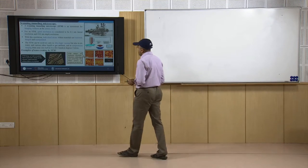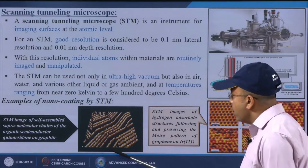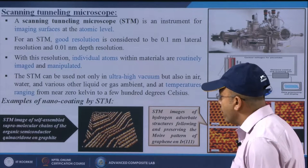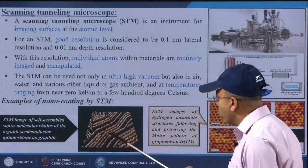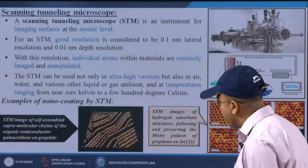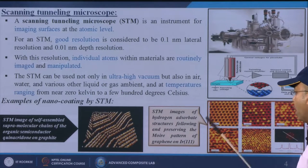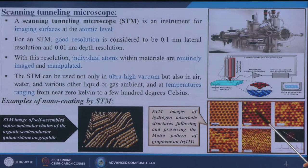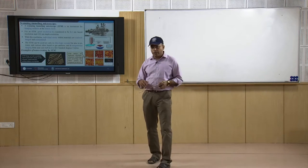Here we show examples of nano coating imaged by STM technology. The first figure shows an STM image of self-assembled supramolecular chains of the organic semiconductor quinostridone on graphite. On the graphite surface, we are doing the coating of this material, and by STM technology we are getting this kind of surface structure. Another example shows the STM image of a hydrogen adsorbate structure following and preserving the moiré pattern of the graphite surface — showing how after coating the material looks on that substrate.